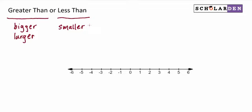For example, 5 is greater than 3. Mathematically, that's only because 5 is to the right of 3. You have to move this way to get to 5. Mathematically, that's all greater than means — something is to the right of another number.